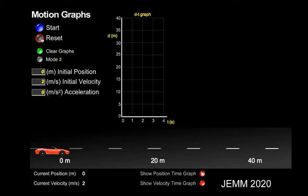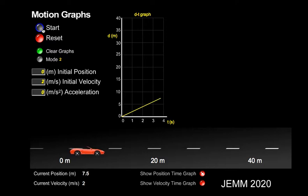Now let's look at an object that's actually moving. We'll give it an initial position of zero, meaning it's going to start at the origin, and we'll give it an initial speed of two meters per second. The acceleration will be zero, so the speed will remain constant. Notice it's a straight line again and the slope of that line is the actual initial velocity. So keep that in mind: the slope on a position time graph is the velocity.